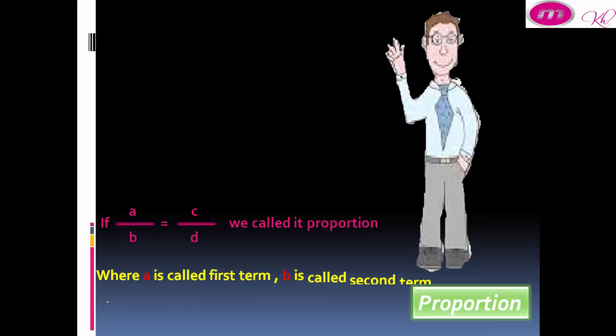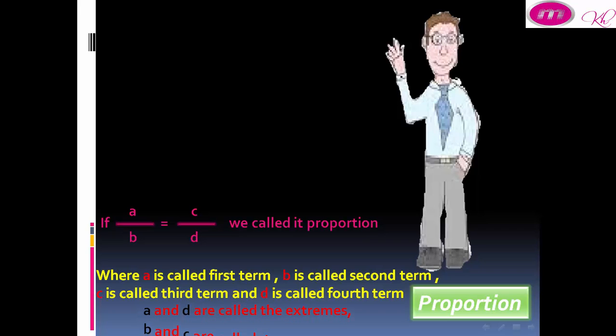Where a is called first term, b is second term, c is third term, and d is fourth term. Where a and d are called extremes, and b and c are called means.